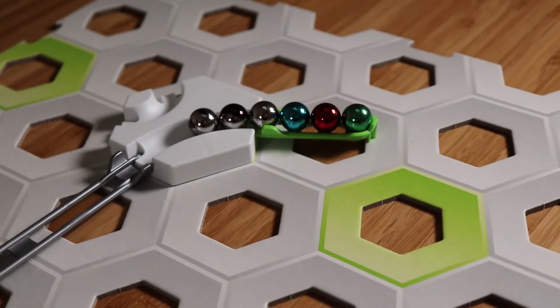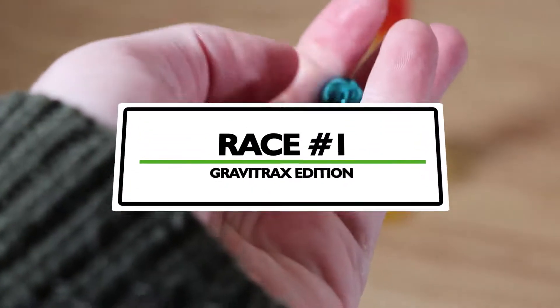Introducing our six marbles competing in this race today. We have the green one, the red marble, the blue marble and we have three chrome marbles. Hard to tell on this picture but the first one is all chrome, the second one is half chrome half black and the third one is chrome with black dots.